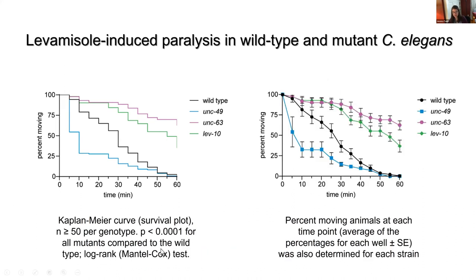Pairwise comparisons can be made with the Mantel-Cox test to determine significance between different strains. For labs or colleges that don't have access to GraphPad Prism, the percent of animals moving at each time point can be graphed as the average of the percentages for each well, plus or minus standard error, using Microsoft Excel. When I performed this assay with my students last spring, 100% of students found the UNC-63 and LEV-10 mutants to be levamisole resistant, and 88% found the UNC-49 mutants to be levamisole hypersensitive — data consistent with published phenotypes.